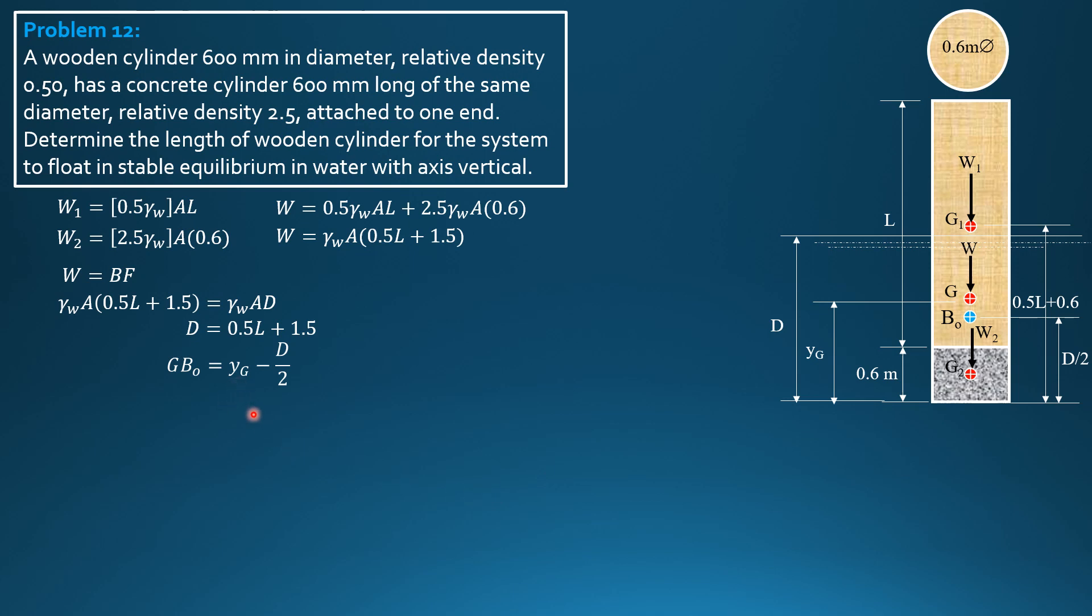But we have to derive YG first. By Varignon's theorem, total weight gamma of water area quantity 0.5 L plus 1.5 times YG equals weight 1, specific weight of water area L, moment arm is 0.5 L plus 0.6, plus weight 2, 2.5 gamma of water area times 0.6, moment arm is 0.3. Cancel out gamma of water area. We have 0.5 L plus 1.5 times YG equals 0.25 L square plus 0.3 L plus 0.45. So YG is 0.25 L square plus 0.3 L plus 0.45 all over 0.5 L plus 1.5.